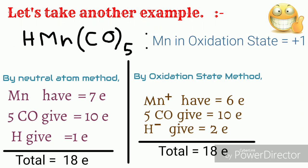Let's take another example: HMn(CO)₅. By neutral atom method, Mn has 7 electrons, 5 CO give 10 electrons, and H gives 1 electron, so total 18 electrons. This is an 18 electron species. And by oxidation state method also, Mn is in its Mn⁺ oxidation state, that is +1 oxidation state, so gives 6 electrons. 5 CO give 10 electrons, and H⁻ gives 2 electrons. Therefore there is a total of 18 electrons.